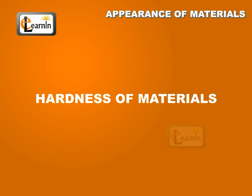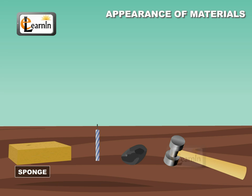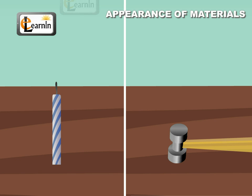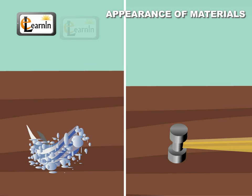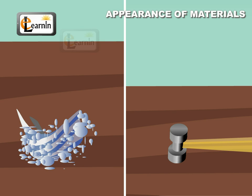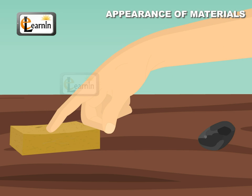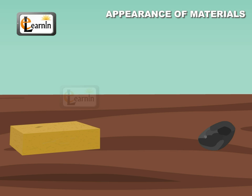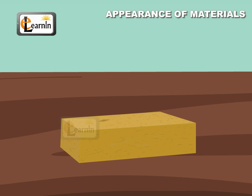Hardness of Materials. Materials can either be hard or soft to touch. Take a sponge, a candle, a piece of stone and a hammer. Try breaking the candle and the hammer with your hands. You will notice that the candle being soft breaks easily, whereas the hammer does not break as it is very hard. Also try to press the sponge and stone. The stone is hard and hence you would not be able to press it, but you can press the sponge without any difficulty.